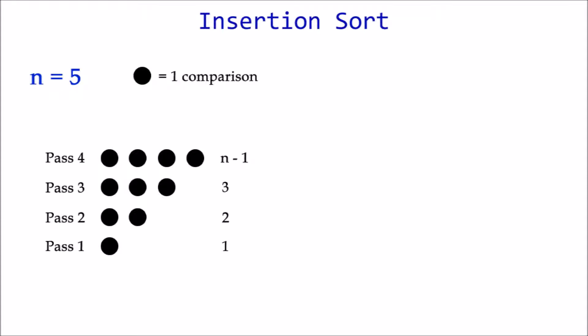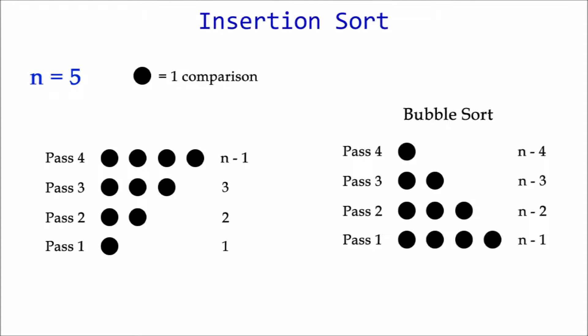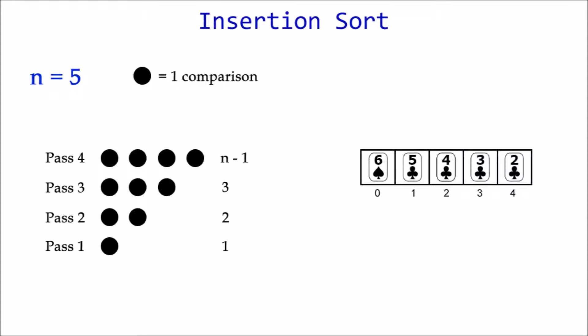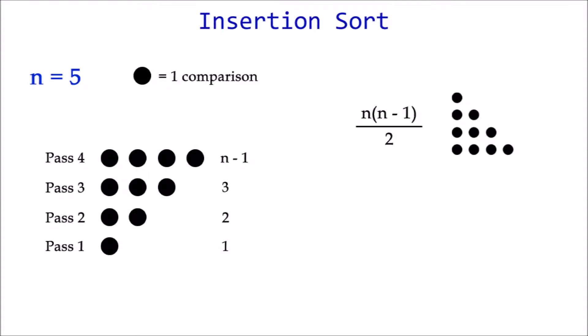Notice that this happens to be an upside-down version of the triangle from the bubble sort analysis. But we can use the same arithmetic progression formula to easily calculate the maximum possible comparisons, which is worst case. This scenario would occur if the list were in reverse order. Again, the formula is n times n minus 1 over 2, which resembles the formula for calculating the area of a triangle. Length times width divided by 2.